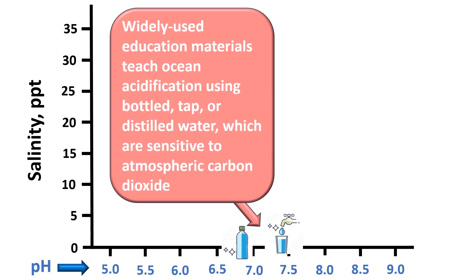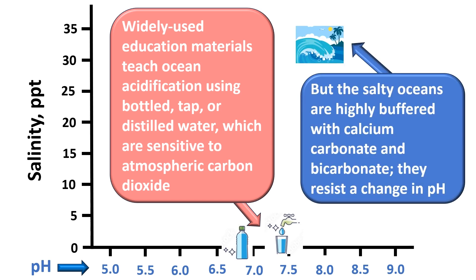Widely used education materials teach ocean acidification using bottled tap or distilled water, which are sensitive to absorbing carbon dioxide in the air, making them slightly acidic. Bottled spring water often contains minerals that make it slightly basic, but none of these waters contain buffering salts. In contrast, the salty oceans are highly buffered with calcium carbonate and bicarbonate. This means that ocean water resists a change in pH.